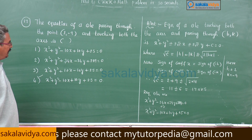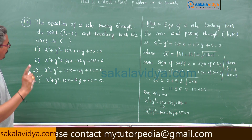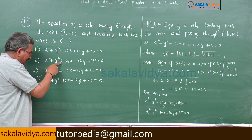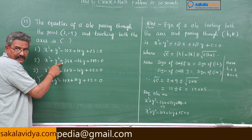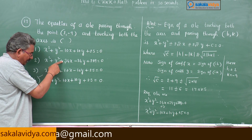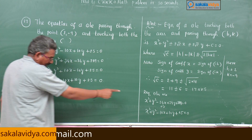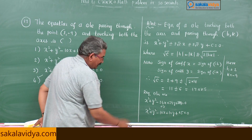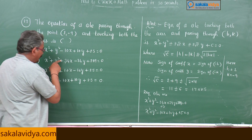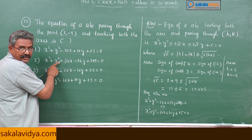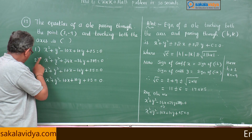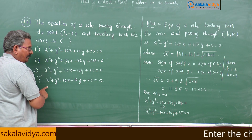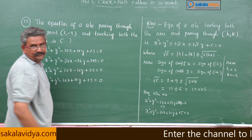Generally we may make a mistake by taking the wrong sign, as sign is very important here. We need a negative sign for the coefficient of x, so we must neglect incorrect options. Either option 2 or 4 could apply, but option 4 is the correct answer.